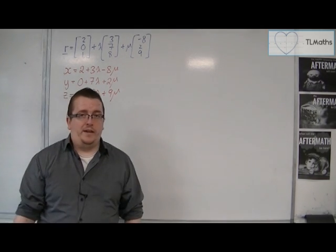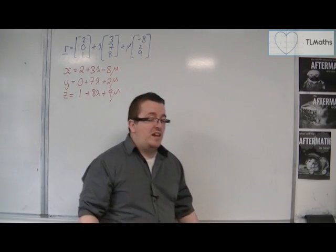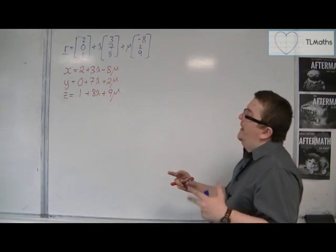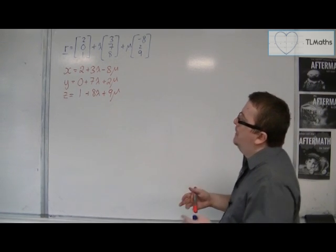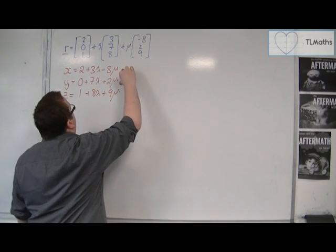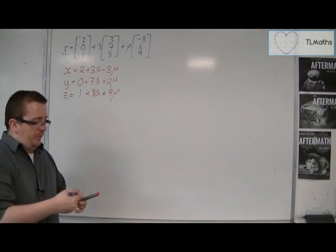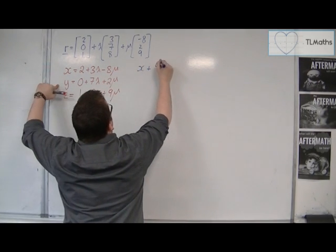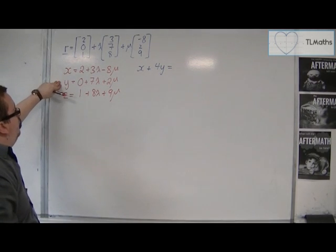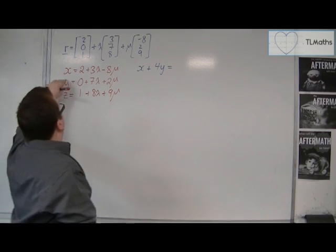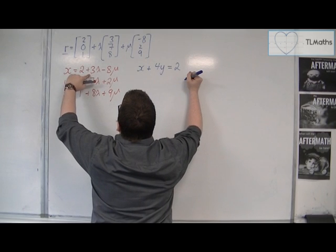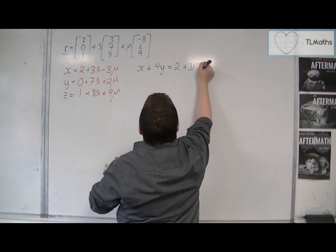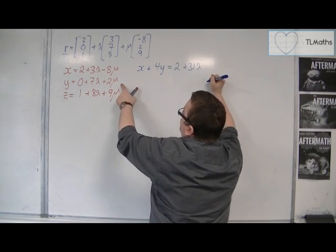What we want to do at this stage is get rid of all the lambdas and mus. The way to do that is to focus on two of the equations and eliminate either lambda or mu. Looking at x and y, I can do x plus 4 lots of y, because that will get rid of the mus for me. So I get 2 plus 4 lots of 0, then 3λ plus 4 lots of 7λ — that's 28 — giving 31λ, and minus 8μ plus 4 lots of 2μ, which is 0.